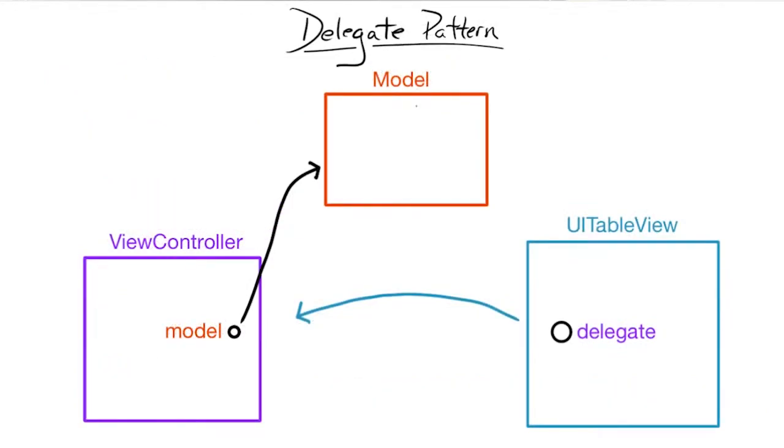No matter the data structure, the table view will need to ask questions of its delegate in order to access the data in the model. Let's take a closer look at the delegate methods that make this possible.